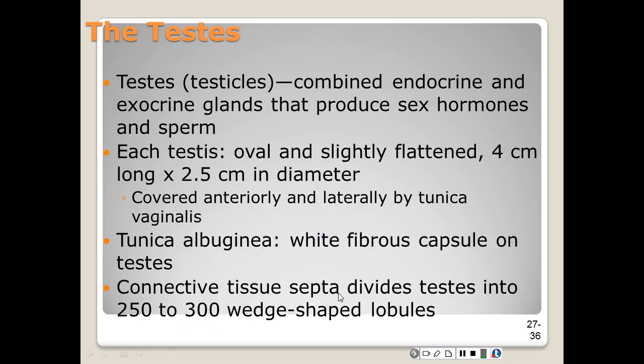Testes are combined endocrine and exocrine glands that produce sex hormones as well as sperm. Each testis is oval and slightly flattened — about four centimeters long and six centimeters from anterior to posterior, and 2.5 centimeters wide. The anterior and lateral surfaces are covered with tunica vaginalis, and the testis has a white fibrous capsule called the tunica albuginea.